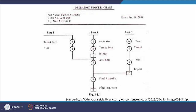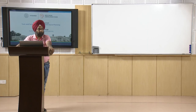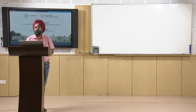This is a washer assembly. Three parts come together and get assembled. From this process chart we can see we have nine operations and three inspections in the overall process. We can now analyze and infer from the chart what is happening in the manufacturing activity.